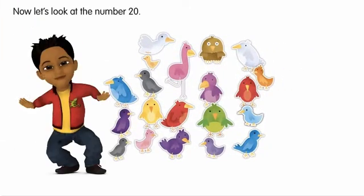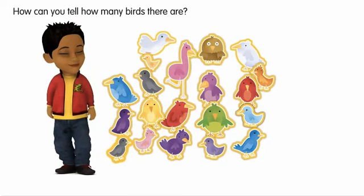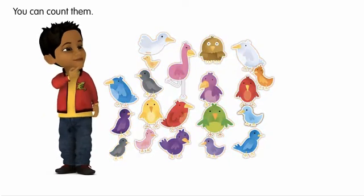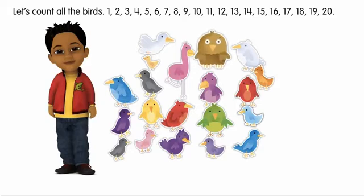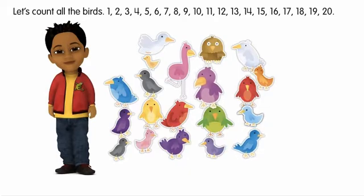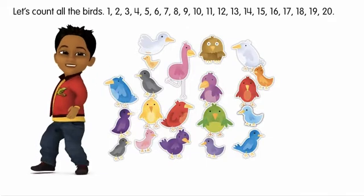Now let's look at the number 20. How can you tell how many birds there are? You can count them. Let's count all the birds. 1, 2, 3, 4, 5, 6, 7, 8, 9, 10, 11, 12, 13, 14, 15, 16, 17, 18, 19, 20.